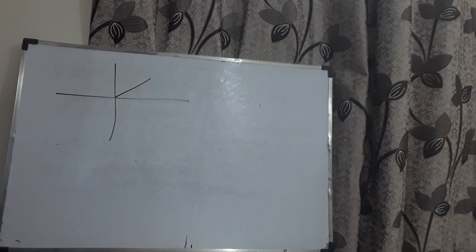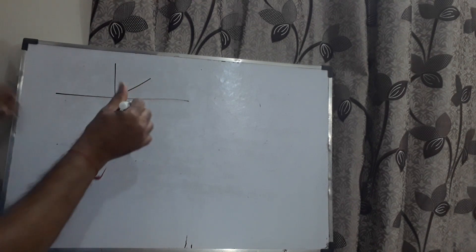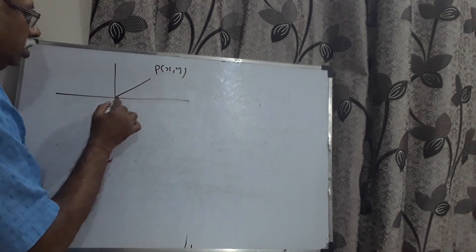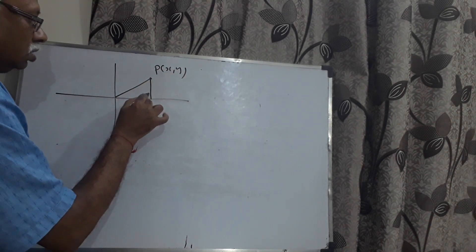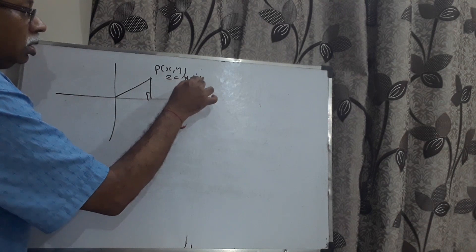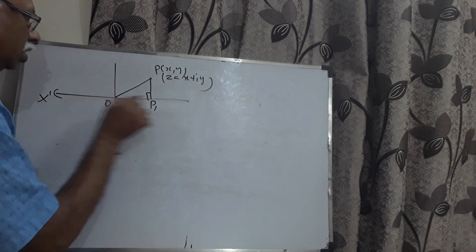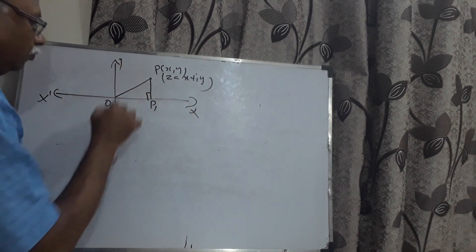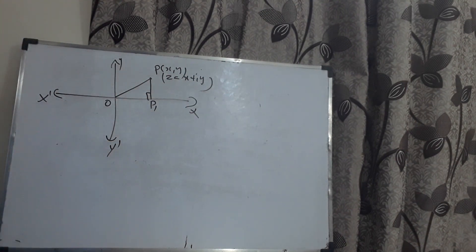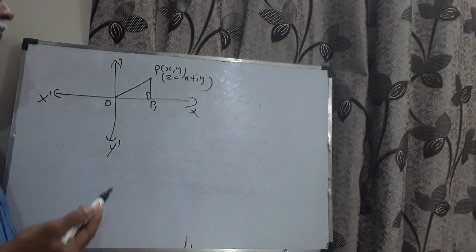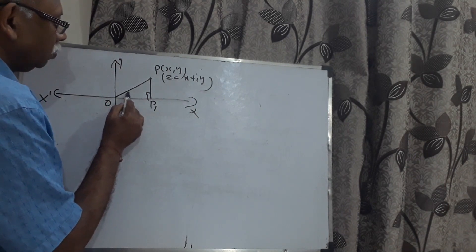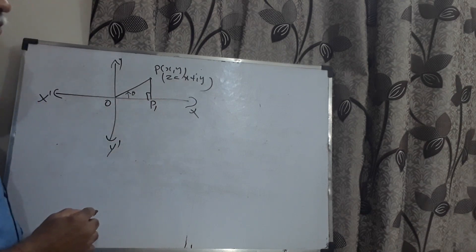Any point on the x-axis will be purely real. Any point on the y-axis will be purely imaginary. Zero is written as 0 plus 0·y. Taking a general point P(x, y) which represents z equals x plus iy, draw PP1 perpendicular to the x-axis. This leads to the polar form, also called the modulus-argument form.